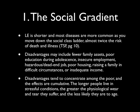The social gradient refers to the concept that life expectancy is shorter and most diseases are more common as you move down the social class ladder — indeed, almost twice the risk of death and illness. Disadvantages may include fewer family assets, poor education during adolescence, insecure employment, and hazardous or dead-end jobs. People exposed to work-related accidents — in construction or exposed to hazardous chemicals or loud noises — tend to be lower on the socioeconomic ladder.